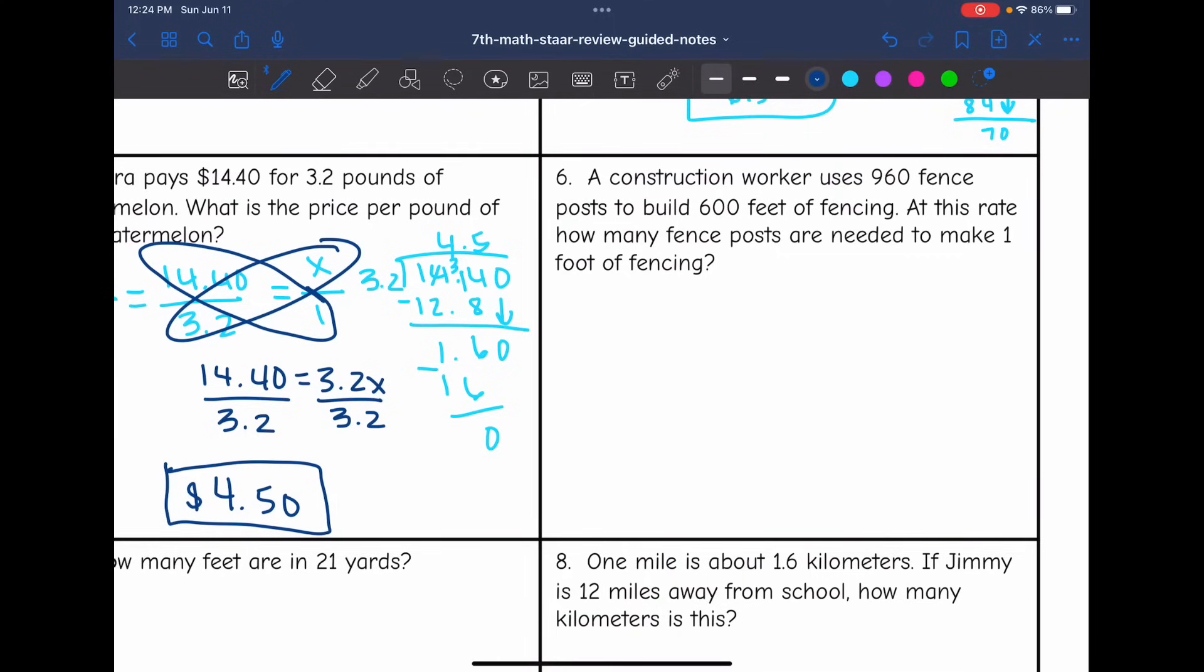Let's look at number six. It says a construction worker uses 960 fence posts to build 600 feet of fencing. At this rate, how many fence posts are needed to make one foot of fencing? So they told us the number of posts it took for a certain number of feet. So that's how we'll set up our ratios. It was 960 posts for 600 feet of fencing. And I want to know how many posts it's going to take for that one foot of fencing.